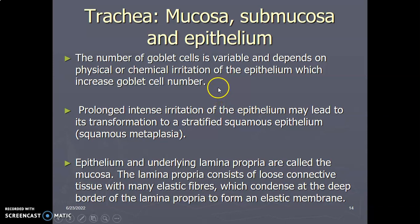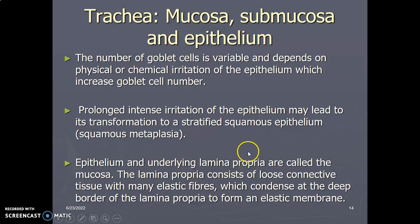The goblet cells are variable depending on the irritation of the epithelium — where there's irritation, goblet cells will be more numerous. Prolonged irritation of the epithelium can lead to transformation from pseudostratified columnar ciliated to stratified squamous epithelium — this transformation of epithelium is called metaplasia, specifically squamous metaplasia. After the epithelium, there is the lamina propria. Pseudostratified columnar epithelium and lamina propria together form the mucosa of the trachea. The lamina propria contains loose connective tissue, elastic fibers, and neurovascular structures.